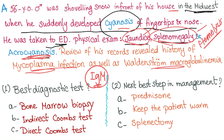What's the best diagnostic test — bone marrow biopsy, indirect Coombs, or direct Coombs? The answer is the direct Coombs test. What's the next best step in management? Prednisone? No, we don't use steroids in the cold subtype. Keep the patient warm, or splenectomy? Splenectomy is contraindicated. So the answer is keep the patient warm.